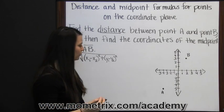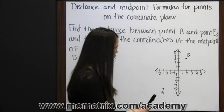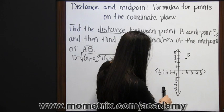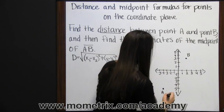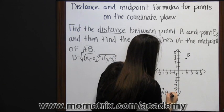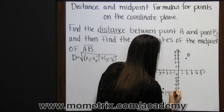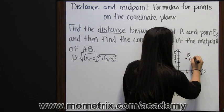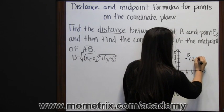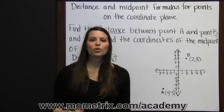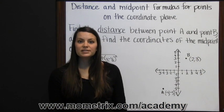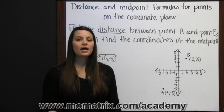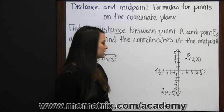So let's look at our points and find those coordinates. A is at negative 4, negative 5. B is at 2, 3. It doesn't matter which one of these points you choose to be your x1, y1, x2, y2, as long as you're consistent.